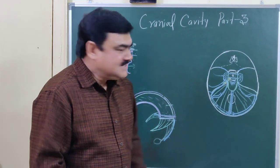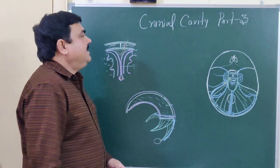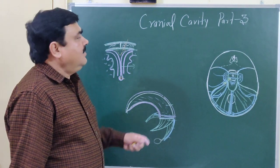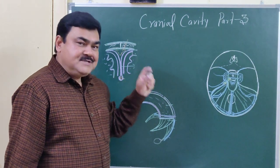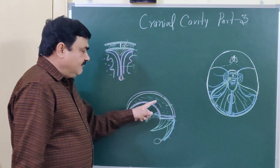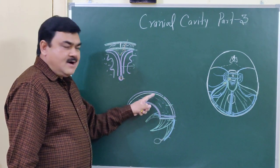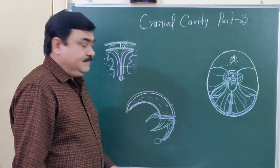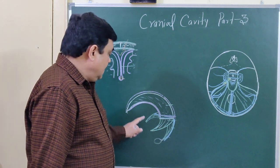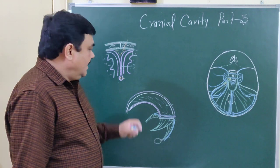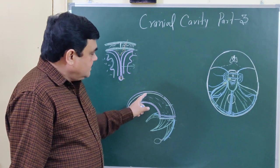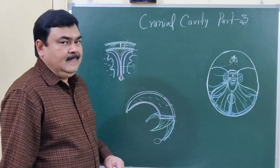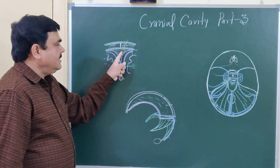Now we'll discuss about the Cranial Cavity Part 3. In Part 1 and Part 2 you have seen the Falx Cerebri, Tentorium Cerebelli, Falx Cerebelli. Now we'll discuss about the Dural Venous Sinuses. The Dural Venous Sinuses, here you can see.